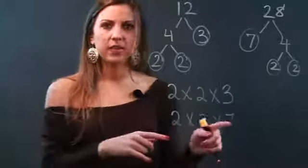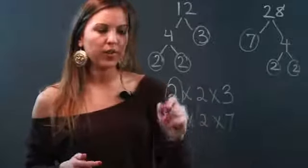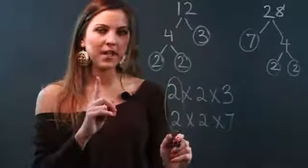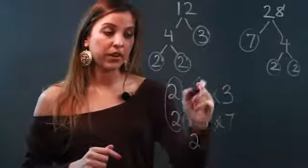Now to find the GCF, you're looking for pairs of numbers that both prime factorizations have. So I see a pair of 2s right here, and what happens is every time you circle a pair it comes out as just one of those numbers. So there's a 2, here's another pair of 2 so they're going to come out as another 2.